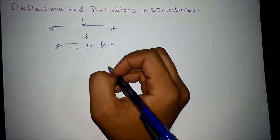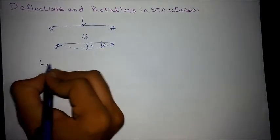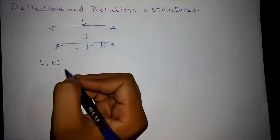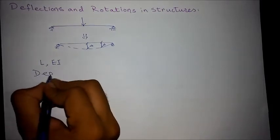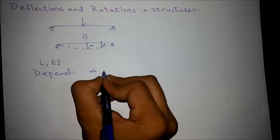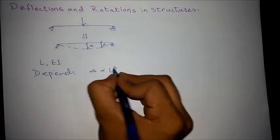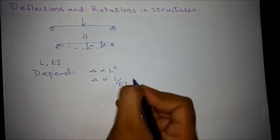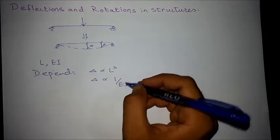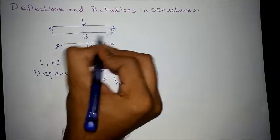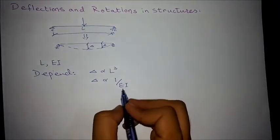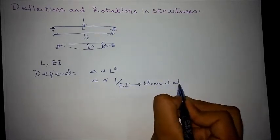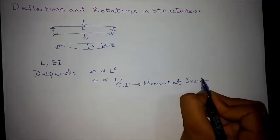To find out deflection we need factors such as length, stiffness of the beam, and the material properties. Deflection depends upon: directly proportional to the cube of length and inversely proportional to the stiffness of the structure. This means the higher the span length, the higher will be the deflection, while the higher the stiffness, i.e. moment of inertia, the lower will be the deflection.